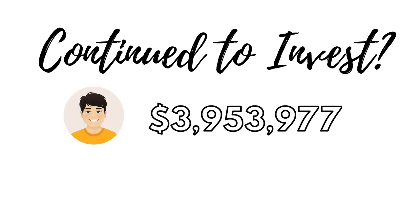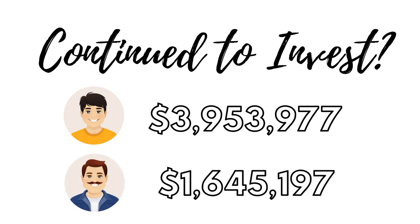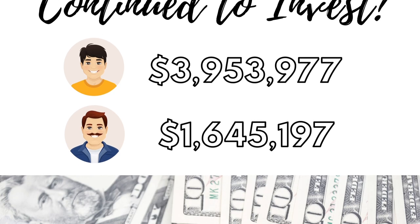I also wondered what would happen if person one continued to invest and didn't stop after those 10 years. Their portfolio could end up being worth just under $4 million by age 60, while person two's investments will still be worth $1.64 million. That's not bad for an extra $50,000 in contributions from starting earlier.